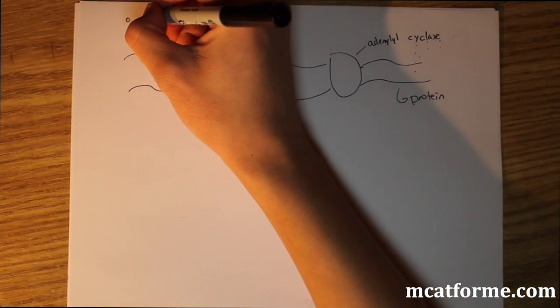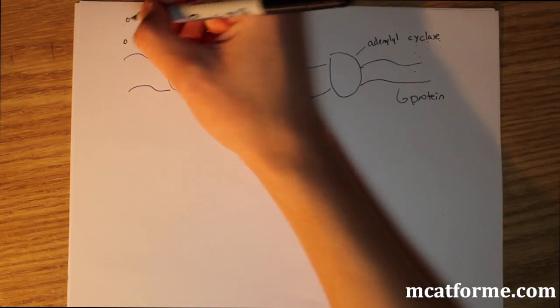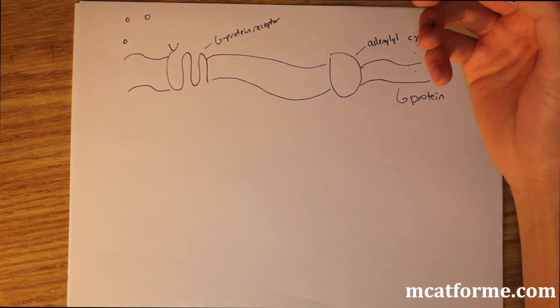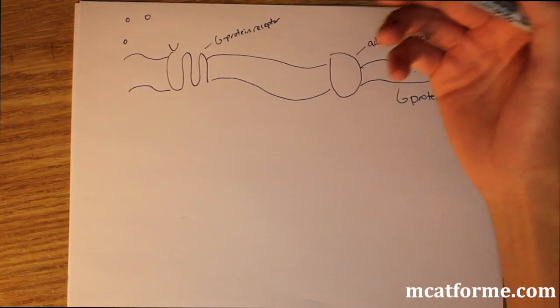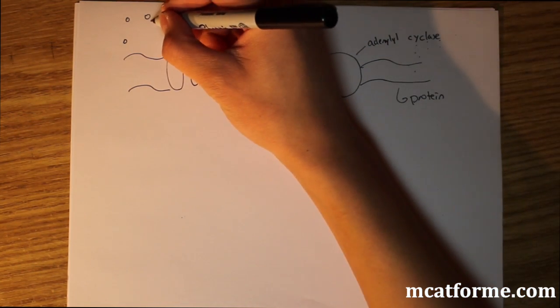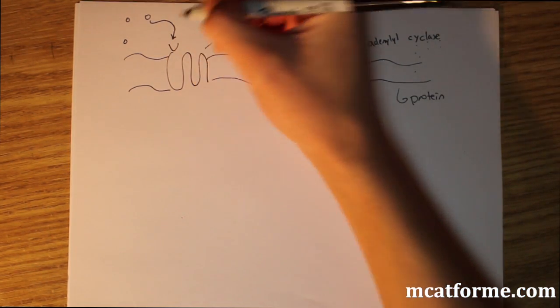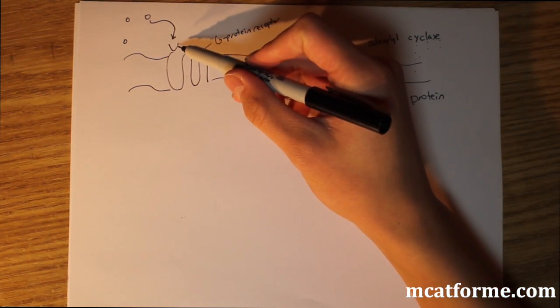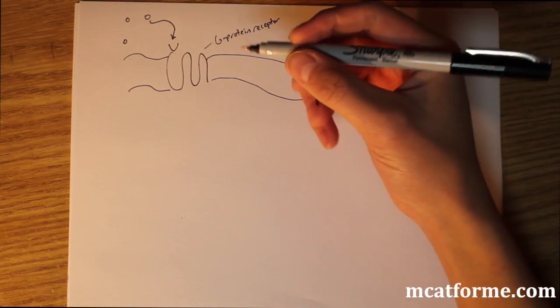Remember this is for peptides. These little circles that I'm drawing are going to be our peptide chains or our proteins. These are going to be our protein hormones that bind to the receptor, the G protein receptor that's on the cell surface.